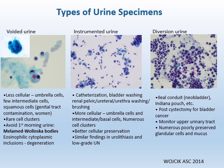Types of urine specimens include voided urine, instrumented urine, and diversion urine. Voided urine is generally less cellular and contains umbrella cells, intermediate cells, and squamous cells, which can be abundant especially in females from genital tract contamination. It can also contain rare cell clusters. First morning urine should be avoided due to degenerative changes. The first picture shows the eosinophilic cytoplasmic inclusions called Melamed-Wolinska bodies, which are frequently seen in first morning urine.